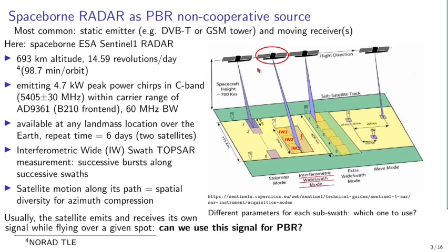Sentinel-1 is a spaceborne radar — a pair of satellites launched by the European Space Agency orbiting at 693 kilometers altitude. The NORAD two-line element orbital parameters show the satellites orbit nearly 15 times per day, about 98 minutes per orbit. Sentinel-1 emits a peak power of about 5 kilowatts, which is why we selected it as a passive bi-static radar source.